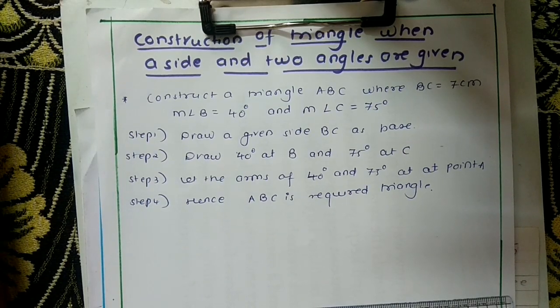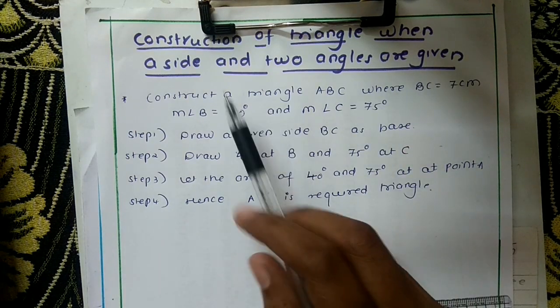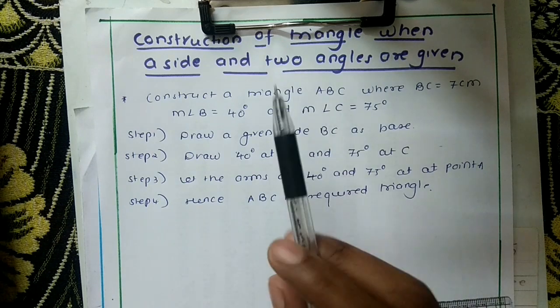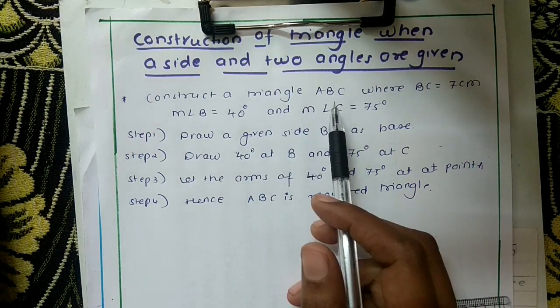Hello students, in this video I am going to explain how to construct a triangle when one side and two angles of the triangle are given. Let us take one example: construct a triangle ABC.